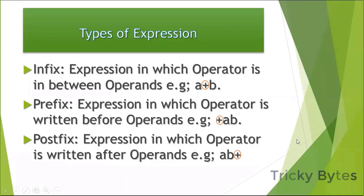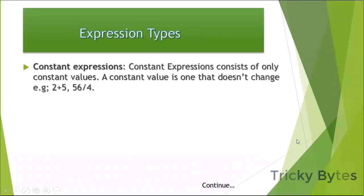We have constant expressions. A constant expression uses only constant values. For example, two plus five—both two and five are constants. These values cannot change. Another example is fifty-six divided by four. Both fifty-six and four are constants. When operators are applied to constants, that is called a constant expression.